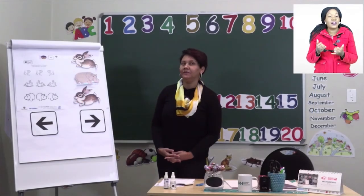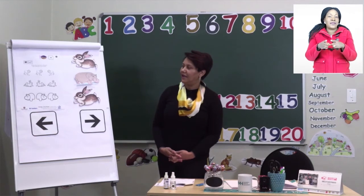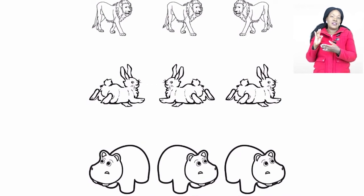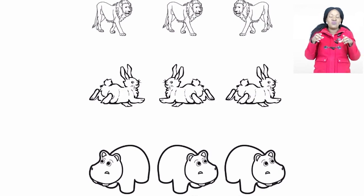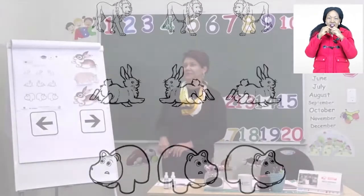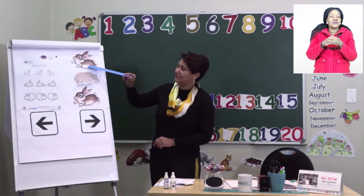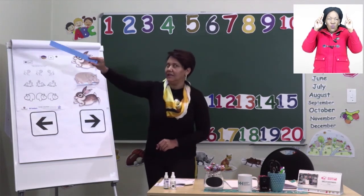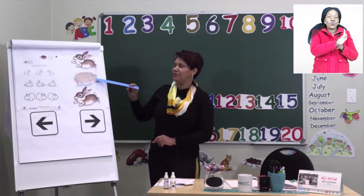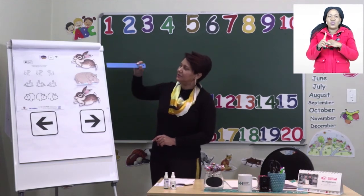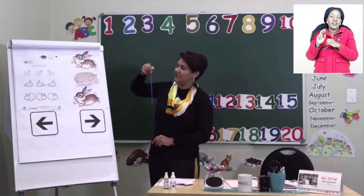Now remember we said we're doing something on differences and directions. Let's quickly turn to page 17. Some of the lions are walking one way and the other one is walking another way — same with the bunnies and same with the hippos. If we look at the direction that the bunnies are going, they are going that direction, and the hippo is probably walking in the water coming towards me.